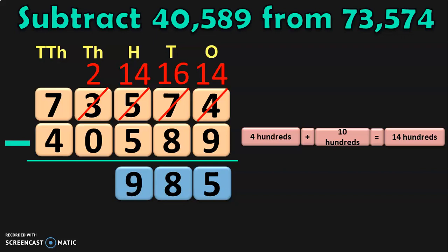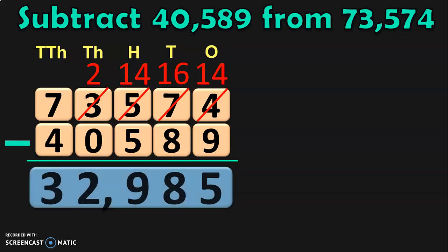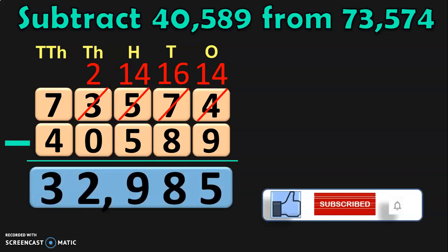Next, move on to the thousands place where you have 2 minus 0. When 0 is subtracted from any number, you get the same number. So, 2 minus 0 is 2. And then in the ten thousands place, you have 7 minus 4, which will give you 3. So, the difference between the two numbers is 32,985.